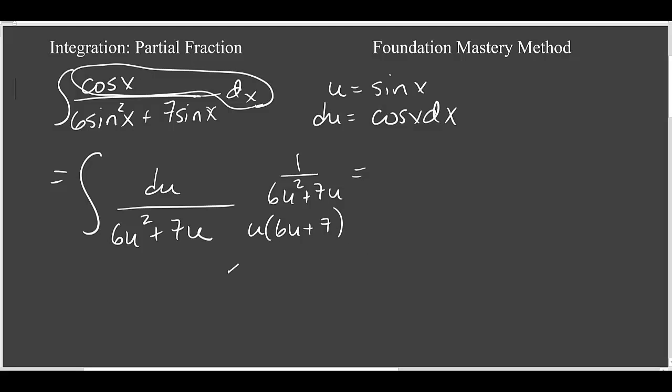So what we have here is a linear factor u and another different linear factor 6u plus 7. That means this can be decomposed as a over u, the first linear factor, and b over 6u plus 7, the second linear factor.